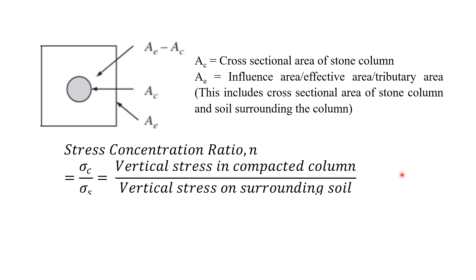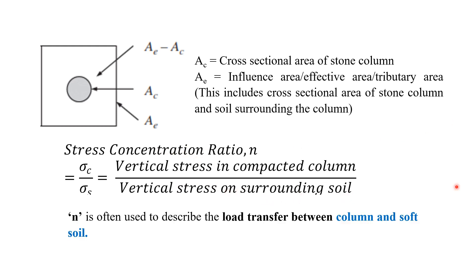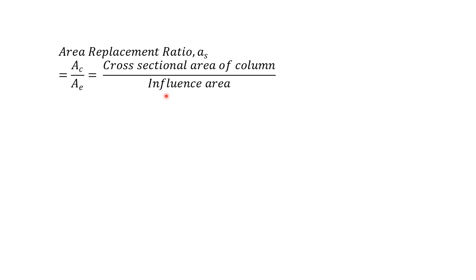The stress concentration ratio, denoted by N, is defined as sigma_c divided by sigma_s — that is, the vertical stress in the compacted column divided by the vertical stress on the surrounding soil. N is often used to describe the load transfer between column and soft soil. The area replacement ratio AS is the ratio of the cross-section area of the column divided by the influence area AE.